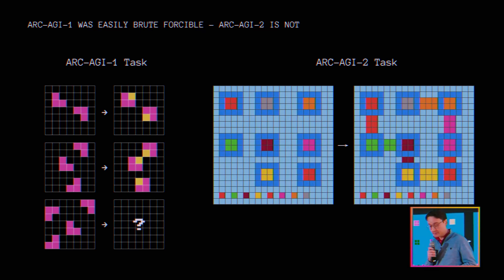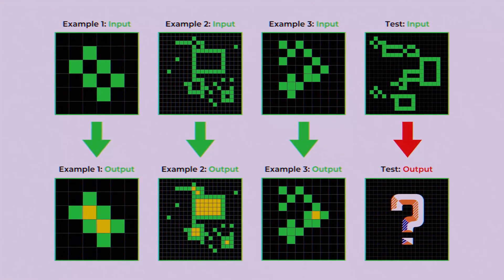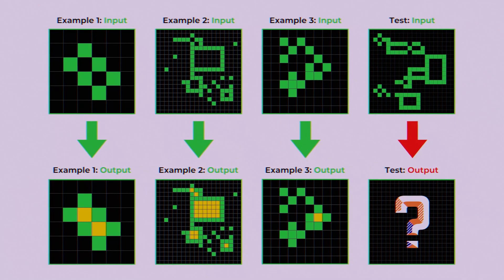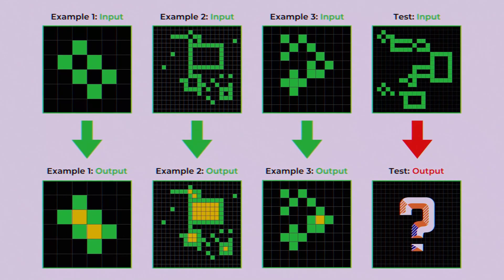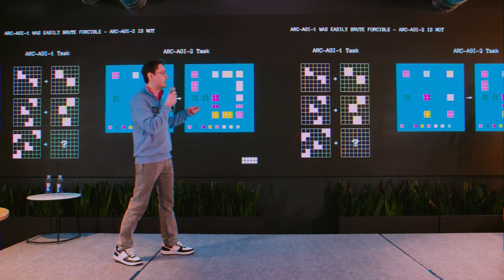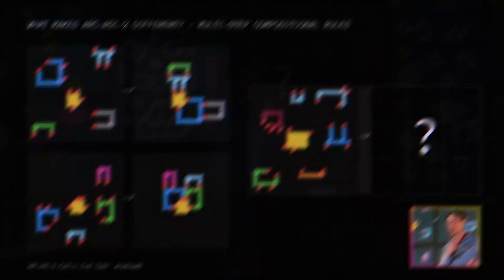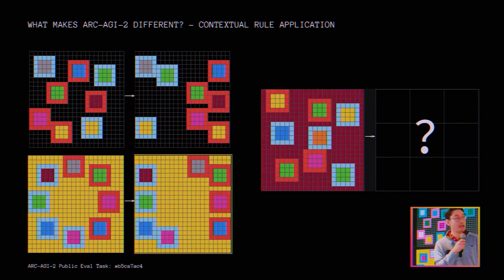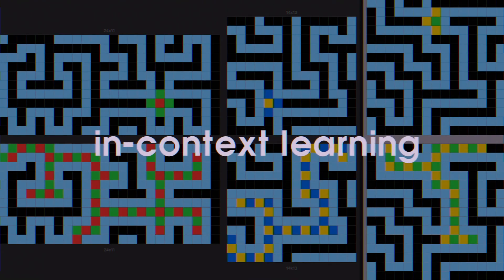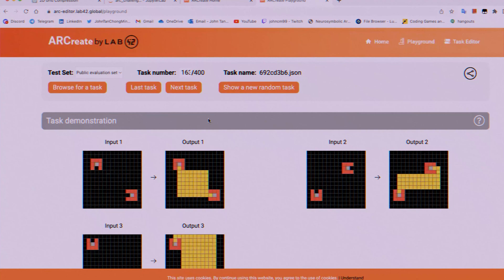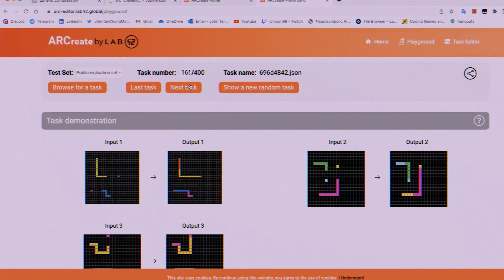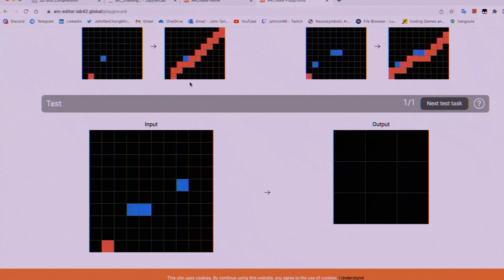The test consists of visual puzzles. You're shown a few examples of an input grid being transformed into an output grid, and you have to figure out the underlying abstract rule to solve a new one. It requires intuition, logic, and the ability to generalize from very little information. For humans, it's tricky. For AI, it's been nearly impossible. When you show these puzzles to a standard LLM and ask it to solve a new one, a method called in-context learning, it fails almost every time. The success rate is effectively zero. This was the perfect arena to test SEAL's adaptability.